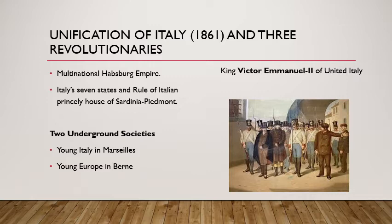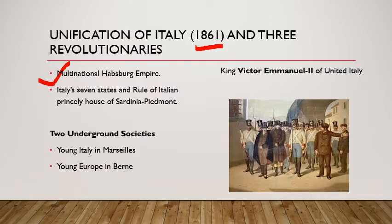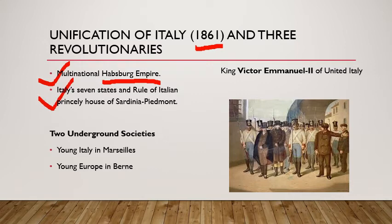Regarding the unification of Italy 1861 and the three revolutionaries — the multinational Habsburg Empire, which we have already learned about, was a patchwork of different regional and linguistic diversity of people living together under one monarch. They differed in culture, religion, language, and food; the only thing they had in common was a shared allegiance to pay to their monarch.